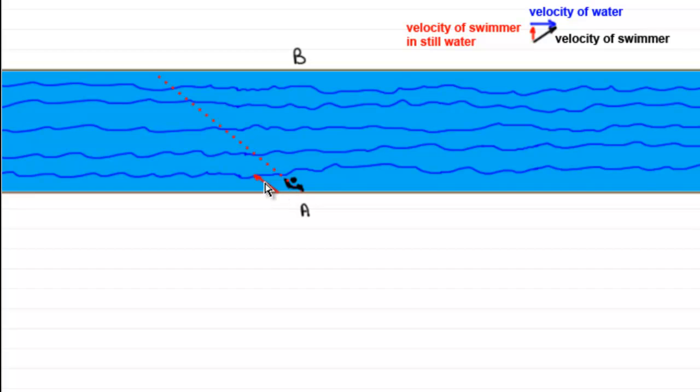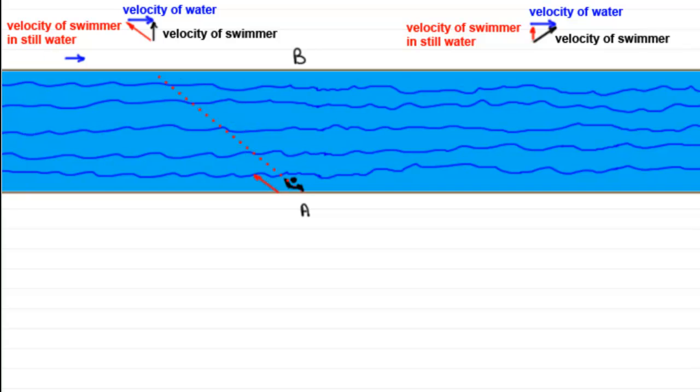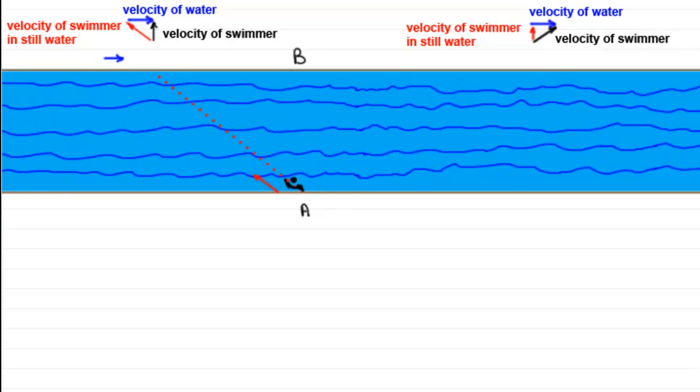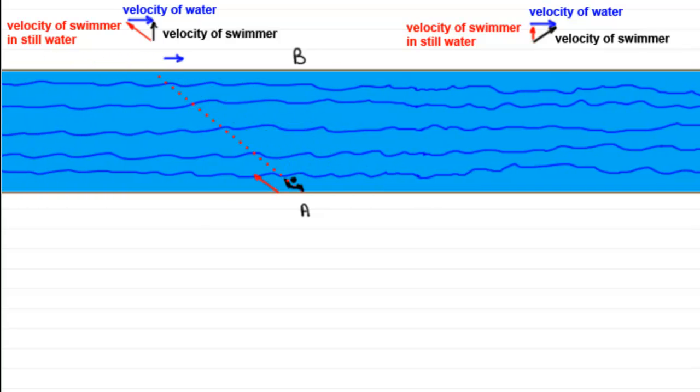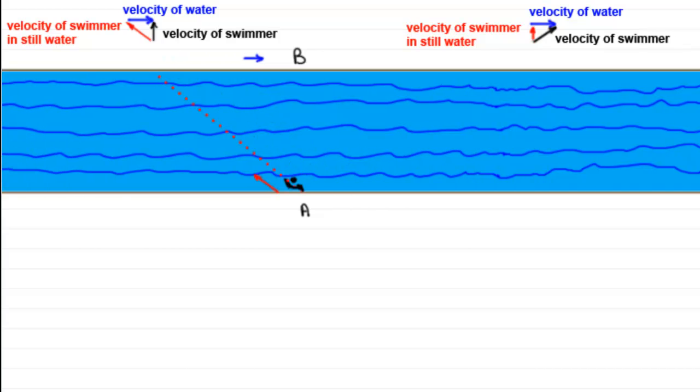And if this is his velocity in the still water, if there was no current, then if we look at combining the vectors of the water, the velocity of the water, with the velocity of the swimmer in still water, we would get an effect where the swimmer can swim directly across the river, providing he can swim hard enough to overcome the velocity of the water.